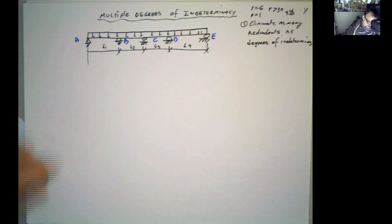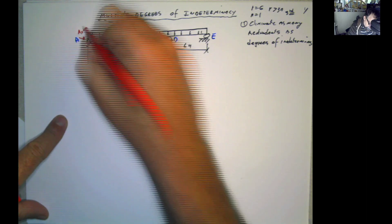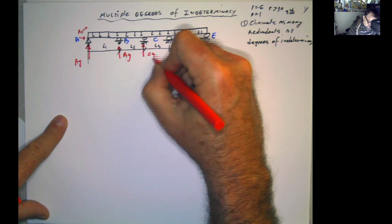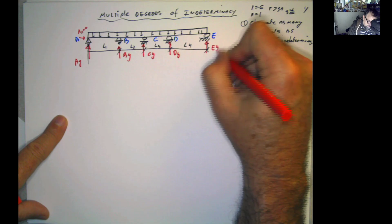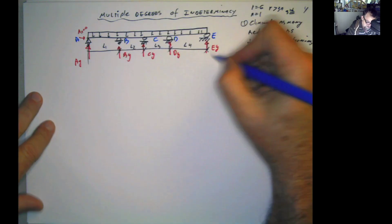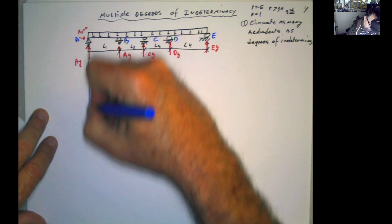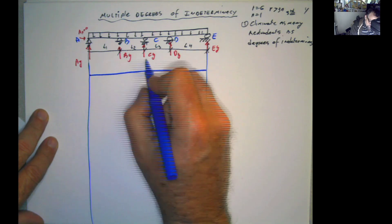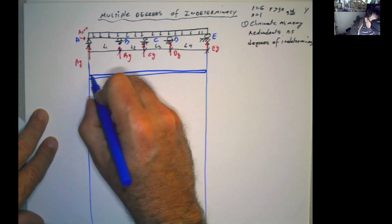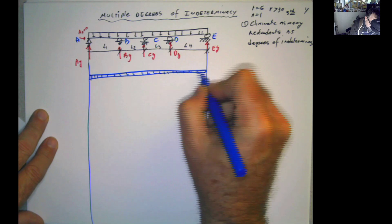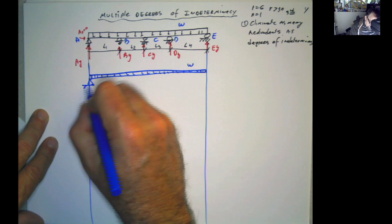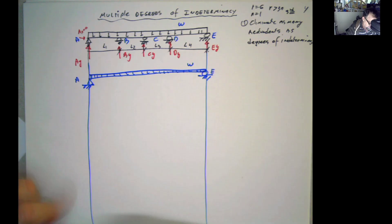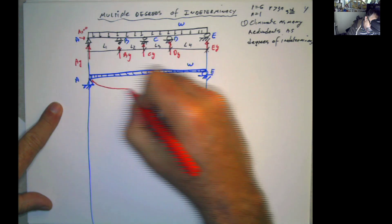You're going to have reactions here. Ax is going to be 0 because there's no force in x. So this is going to be Ay, By, Cy, Dy, and Ey. I'm going to create a primary structure by eliminating By, Cy, and Dy as redundants, and I'm going to keep my distributed load, whatever value that is — omega. I'm going to keep only supports A and E. If that is the case, this beam, which is my primary structure, is going to deflect something like that.